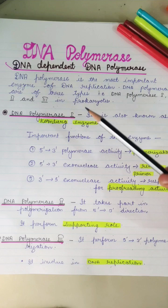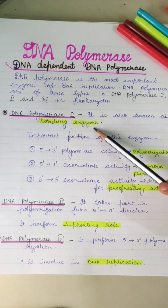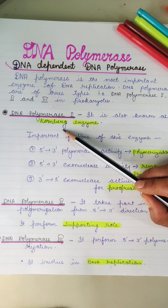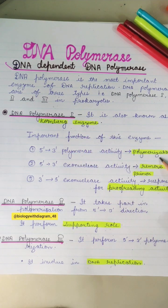and DNA polymerase 3. First, we will study DNA polymerase 1, which is also known as Kornberg enzyme because it was discovered by Kornberg. Important functions of this enzyme: